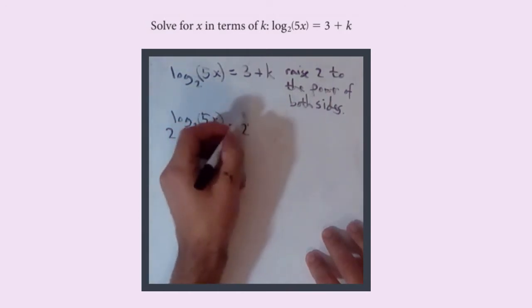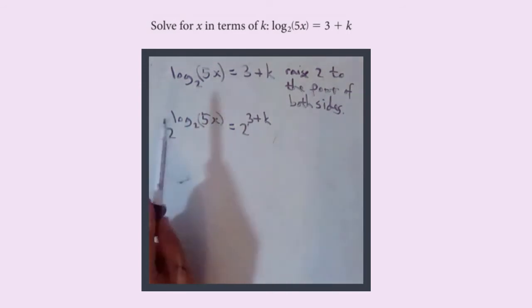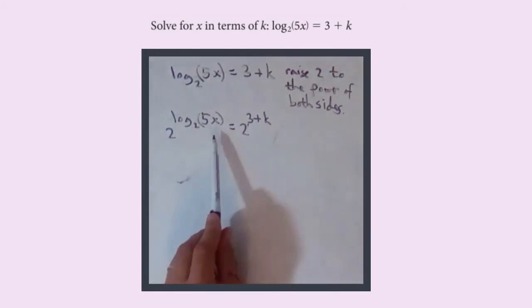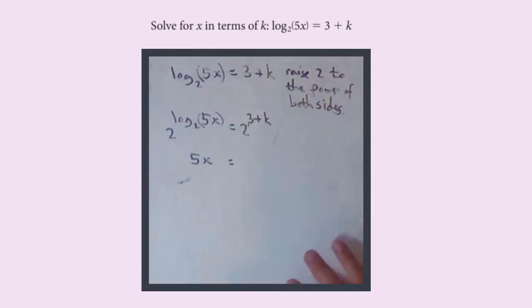5x equals 2 to the power of 3 plus k. Remember, log base 2 of 5x is the power you need to raise 2 to in order to get 5x. So if we raise 2 to that power, you will get 5x. So this whole term is 5x. 5x on the left hand side equals...